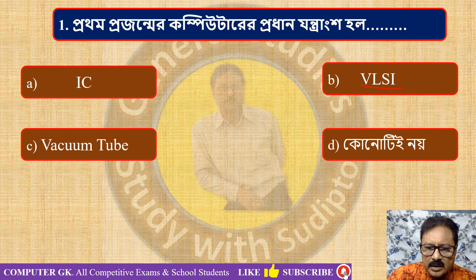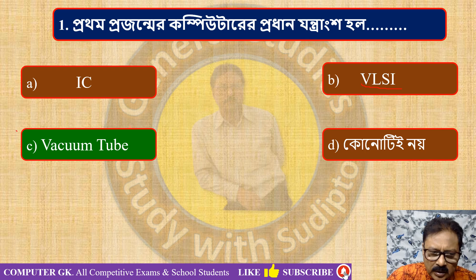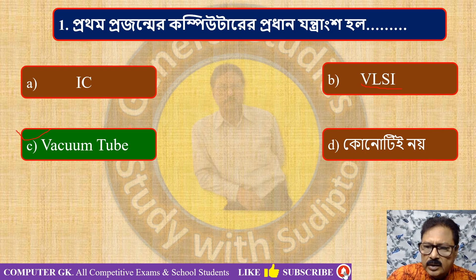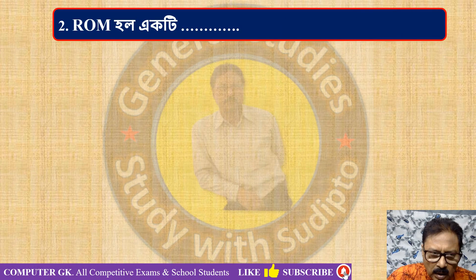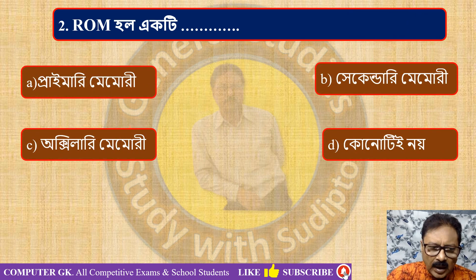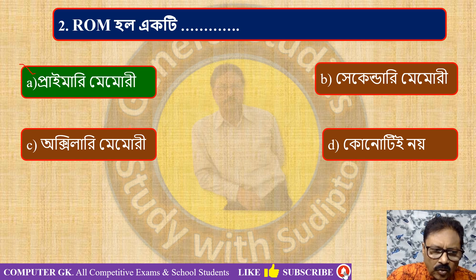ROM is a primary memory. Secondary memory is also called auxiliary memory. ROM is classified as a primary memory.